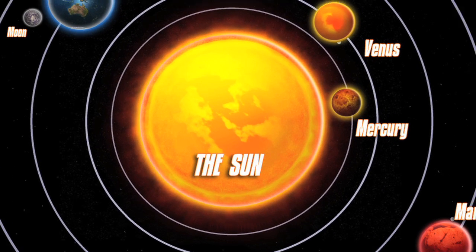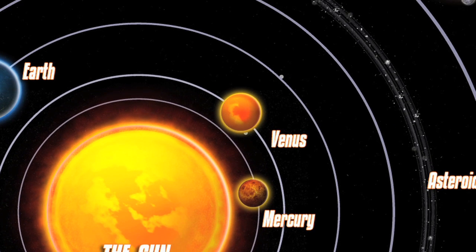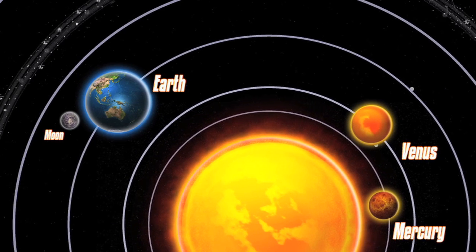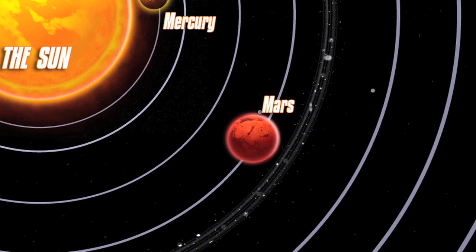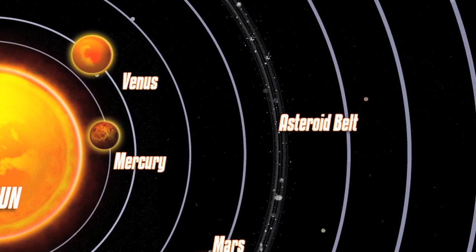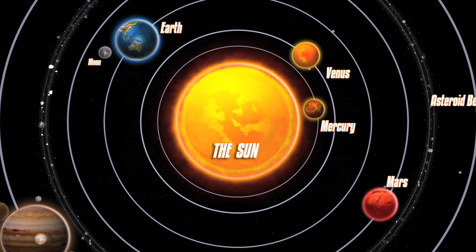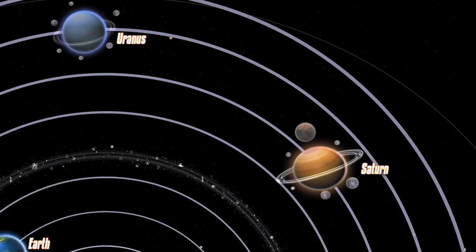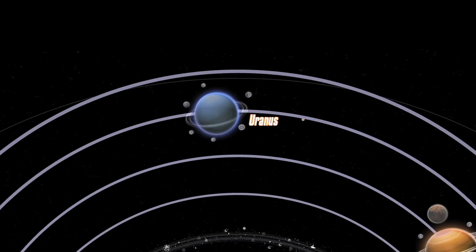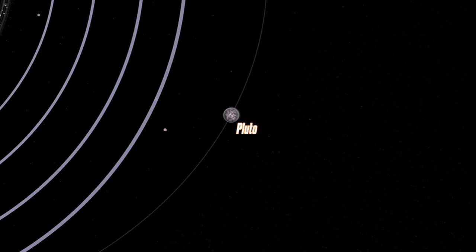The inner planets are Mercury, Venus, Earth, and Mars. There is also an asteroid belt, followed by the outer planets: Jupiter, Saturn, Uranus, Neptune, and Pluto.